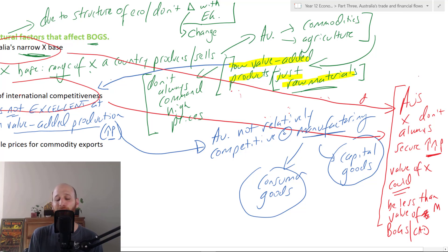Because of the narrow export base and the lack of international competitiveness, Australia's exports don't always secure high prices, outside of mining booms perhaps. So the point I'm making here is that the value of exports could be less than the value of imports, because remember we're bringing in all that high value stuff we don't produce. And if the value of exports is less than the value of imports, BOGS is going to worsen the trade balance, and that will then worsen the current account deficit. That might be a bit confusing, and I don't blame you if you have questions - just put it in the comments.